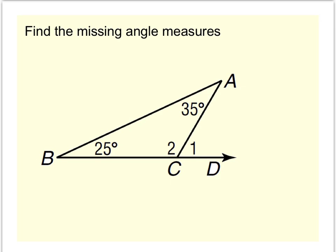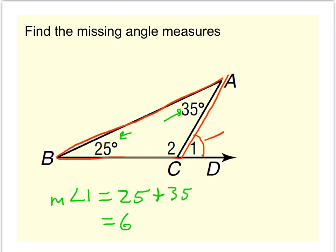Angle 1 is an exterior angle to triangle ABC. And as a result, I know that the exterior angle theorem says angle 1 is equal to the sum of the two remote interiors. Now the two remote interior angles are the ones that don't touch angle 1. In other words, the two remote interiors would be 35 and 25. So once again, the exterior angle theorem says angle 1 is equal to 25 plus 35, which makes 60 degrees.